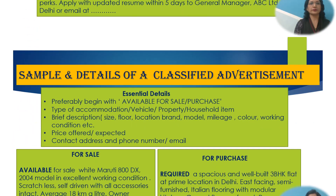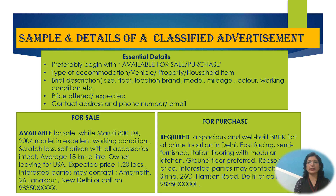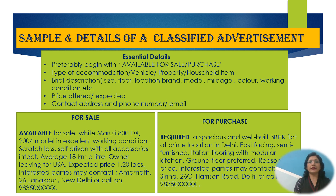Here are the important points for sale and purchase type classified advertisements with examples. The essential details are: begin with 'Available for Sale' or 'Purchase,' mention the type of accommodation, vehicle, property, or household items. Give a brief description in the form of size, floor, location, brand, model, miles covered, and color. Mention the working condition — whether it is in excellent working condition or otherwise. You may quote a price or write 'Price Negotiable' along with an expected price. Don't forget to give contact details.